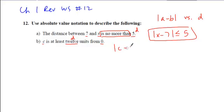It is at least, so it has to be greater than or equal to. I don't need the 0. So I can write this as absolute value of c is greater than or equal to 12.